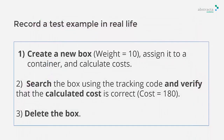Our test will have three main steps. Create a new box, assign it to a container and set the cost using the Set Cost button. Search for the box in the work with list and verify that the cost has been successfully assigned. Delete the creative box.